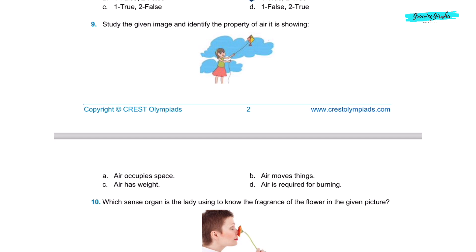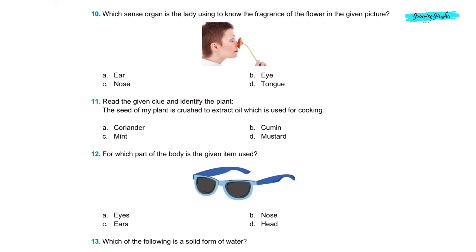Question 9. Study the given image and identify the property of air as it is showing. Option B, air moves things. Question 10. Which sense organ is the lady using to know the fragrance of the flower in the given picture? Question 11. Read the given clue and identify the plant. The seed of my plant is crushed to extract oil which is used for cooking. Option D, mustard. Question 12. For which part of the body is the given item used? Option A, eyes.